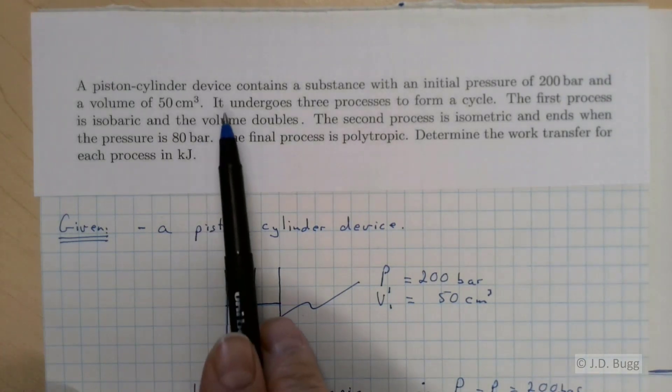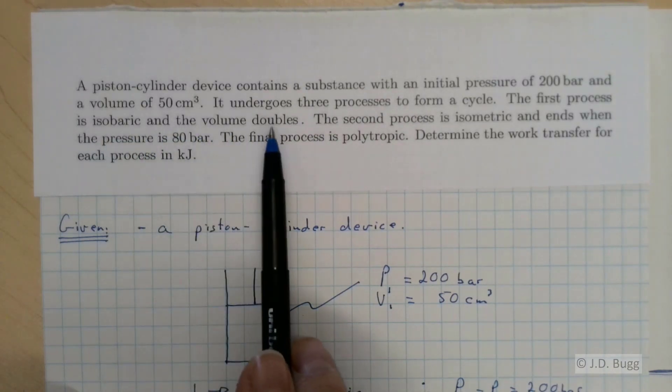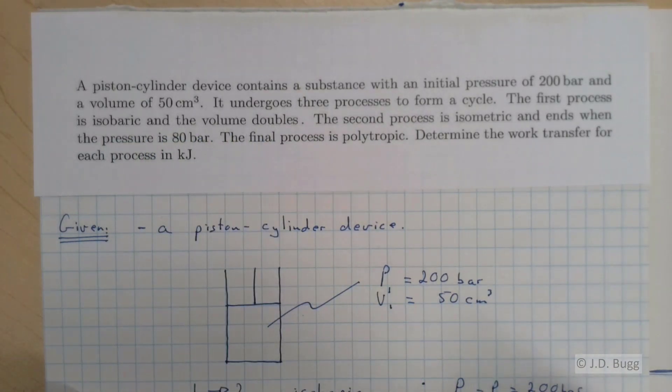It also says that the first process is isobaric and the volume doubles. So we also know then that V2 is 2V1 and that'll be 100 centimeters cubed. So we're learning things about the end state of this process from the description.